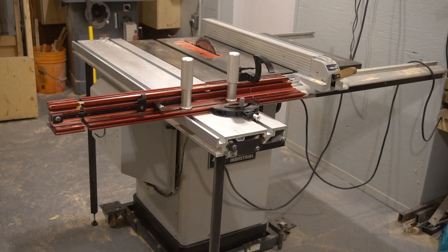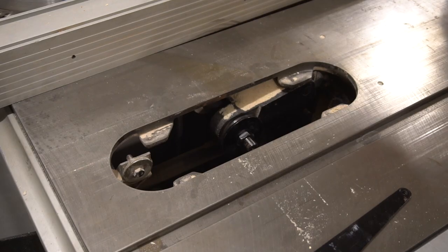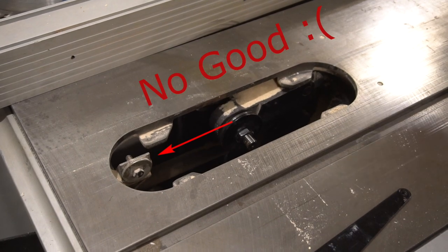As a matter of fact, this saw never came with a riving knife and on top of that, the mounts used for the safety guard don't actually go up and down, they're fixed mounts.